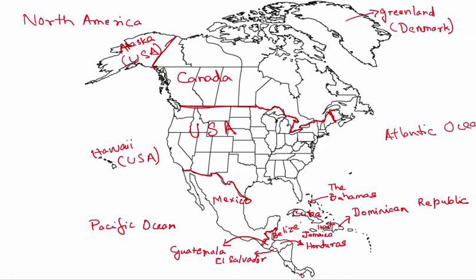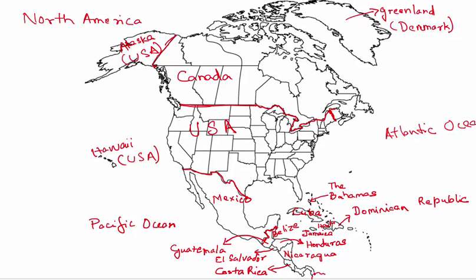Below those two countries, you have a series of three more countries from top to bottom. The first is Nicaragua, the second is Costa Rica — Costa is a separate word — and the last country, which borders Colombia and faces both oceans, is Panama.